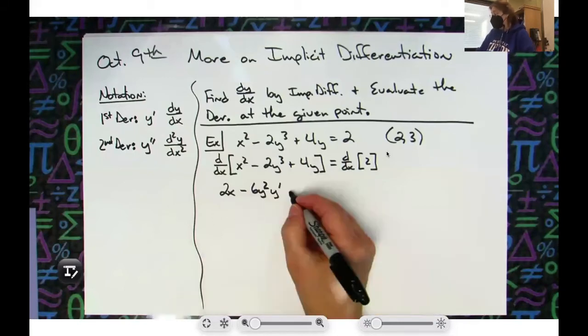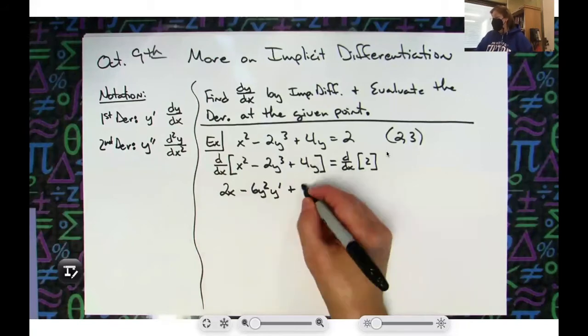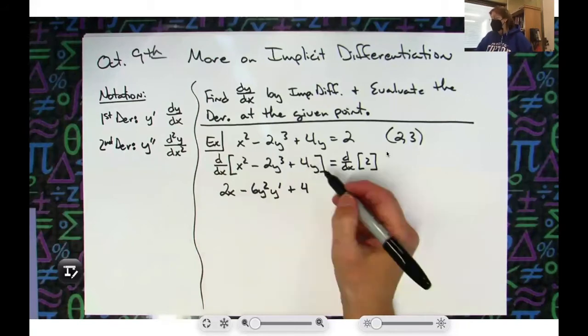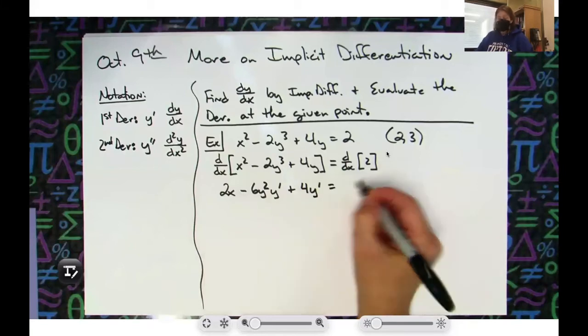I've got a 4y term there, and again it's a y term, so I'm going to take the derivative like normal which is going to be a 4. And then since it is a y term I've got to include the chain, so y prime. Derivative of that 2 is going to be 0.